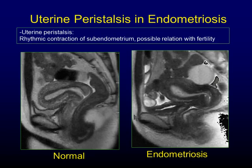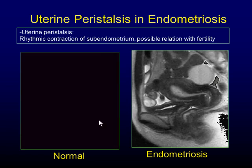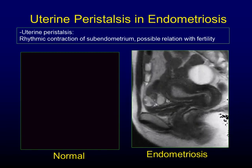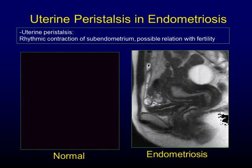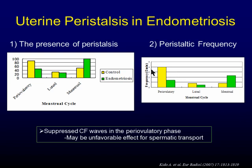Uterine peristalsis is a rhythmic contraction of the subendometrial myometrium and is considered to be related with fertility. In a normal uterus, peristaltic waves of the subendometrial myometrium travel from cervix to fundus. In patients with endometriosis, no identifiable waves are found. In our study, cervix-to-fundus peristalsis and frequency are significantly suppressed in patients with endometriosis during the periovulatory phase. This phenomenon may result in an unfavorable effect for sperm transport.